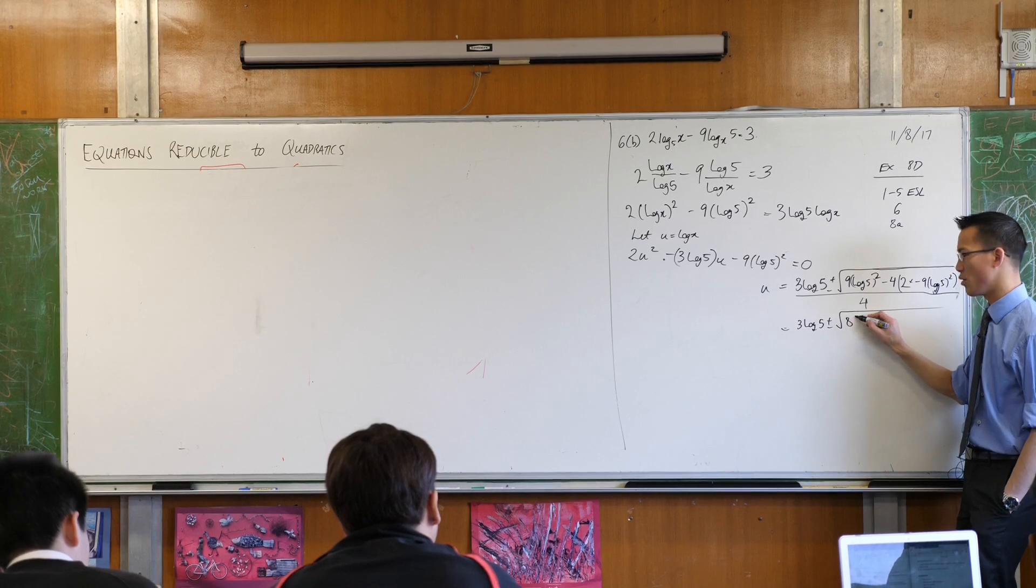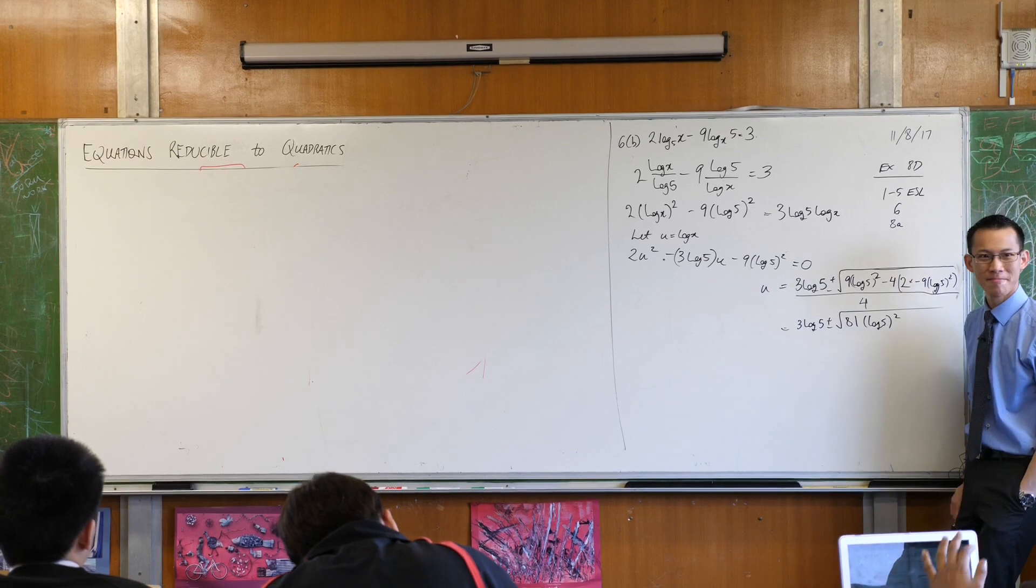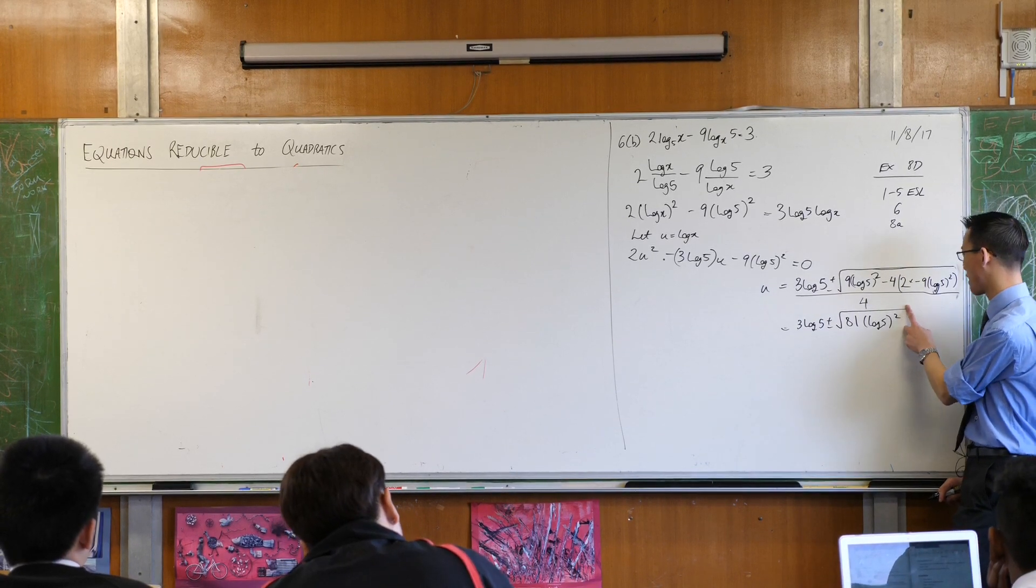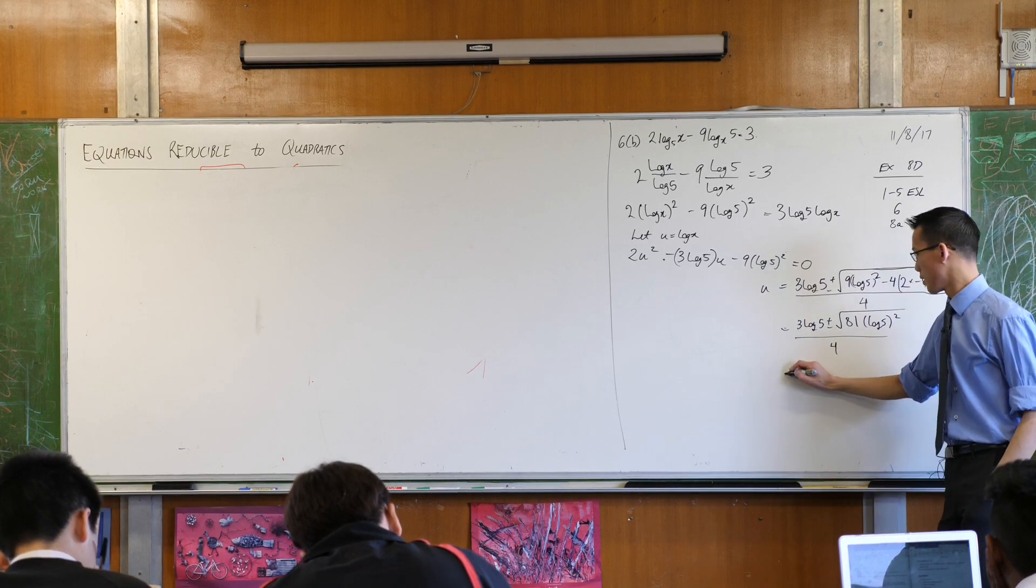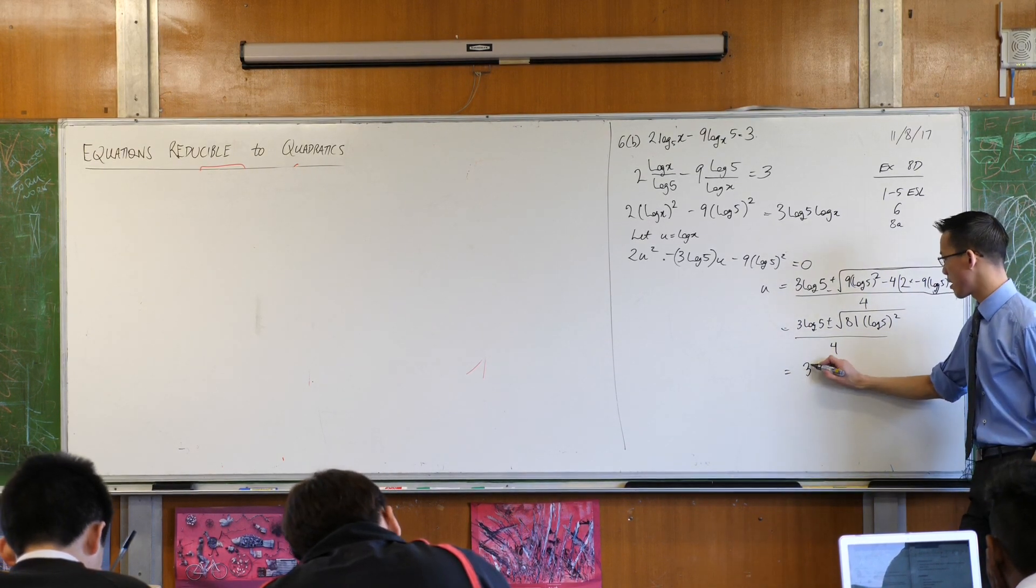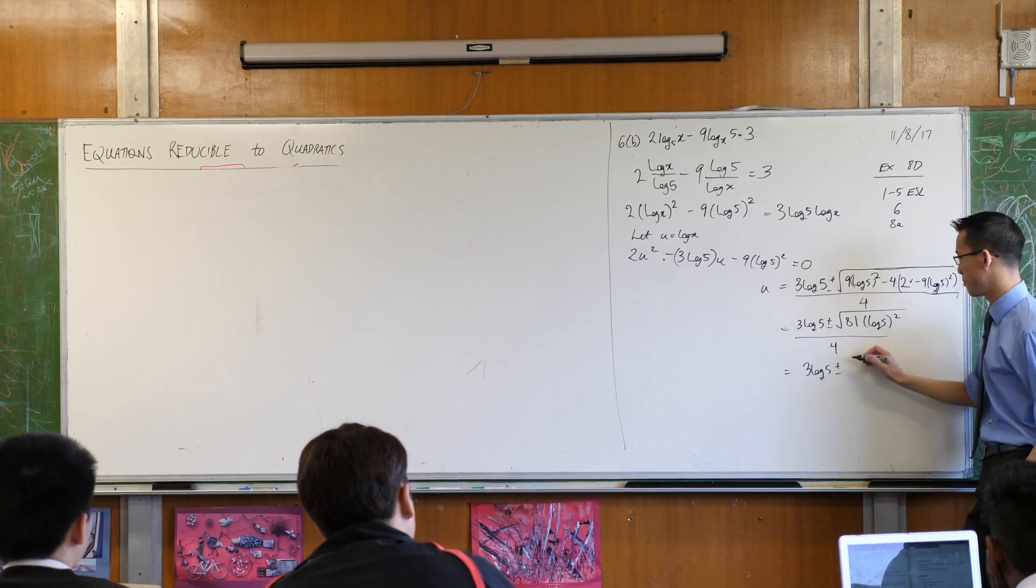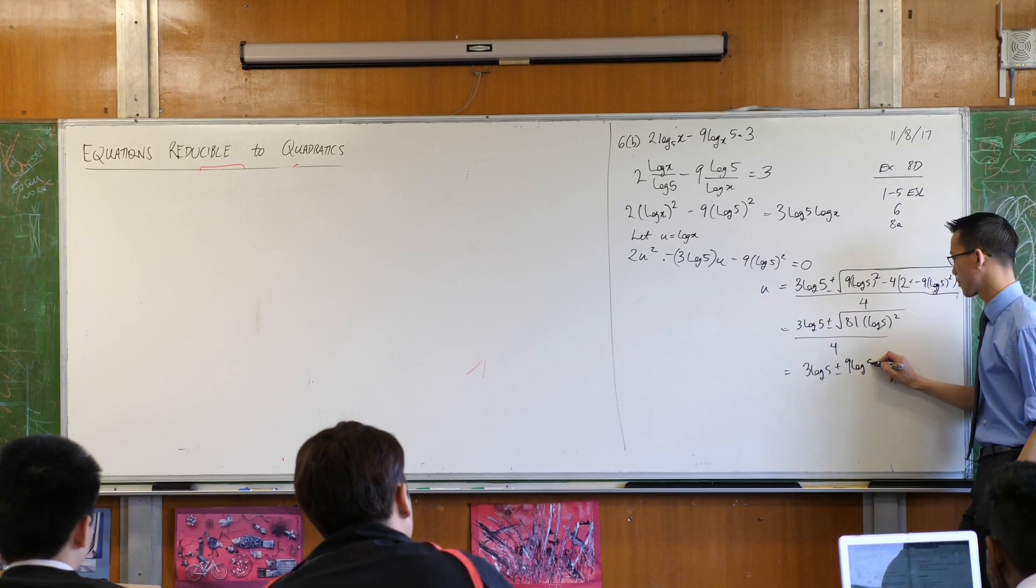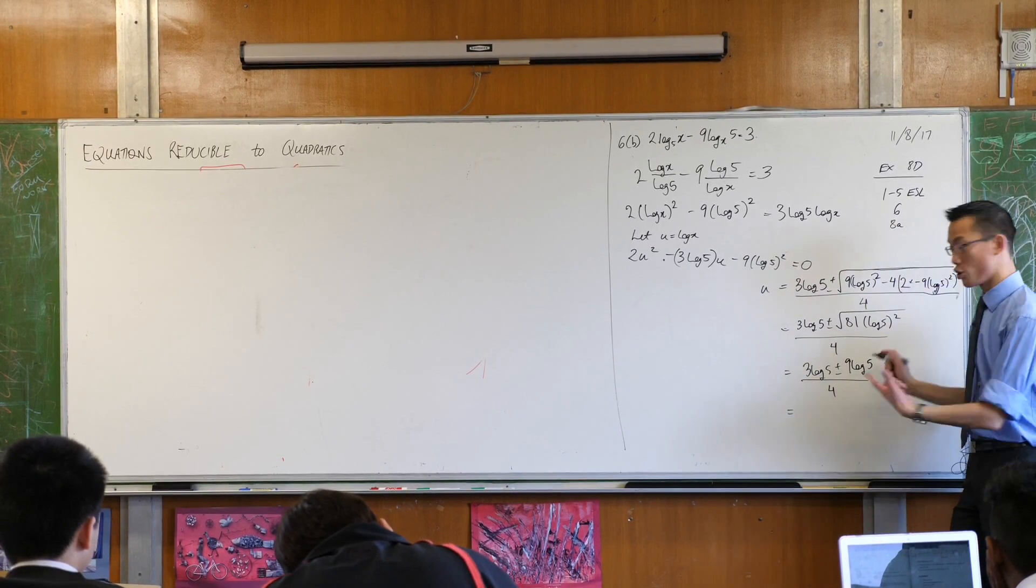So I've got 9 of them here and I've got plus 72 of them there. That looks to me like 81 of them, yeah? That's convenient. So this is looking good. This is giving us all the cues that we're on the right track. This is divided 3 by 4. Let's have a look. This is 3 log 5 plus or minus, how many log 5's am I going to have? 9 of them. All divided through by 4.